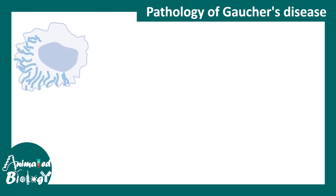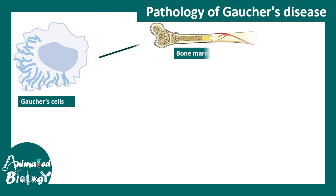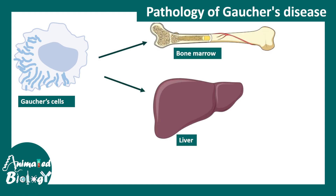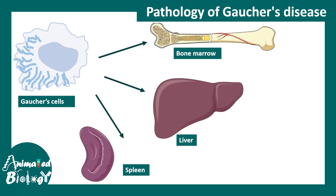Gaucher cells are actually found in the bone marrow, liver, and the spleen.